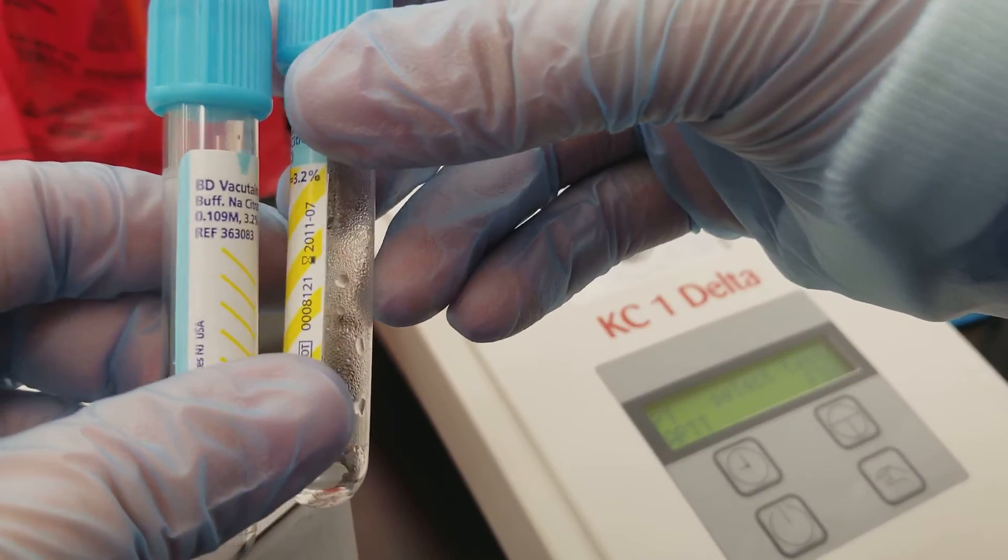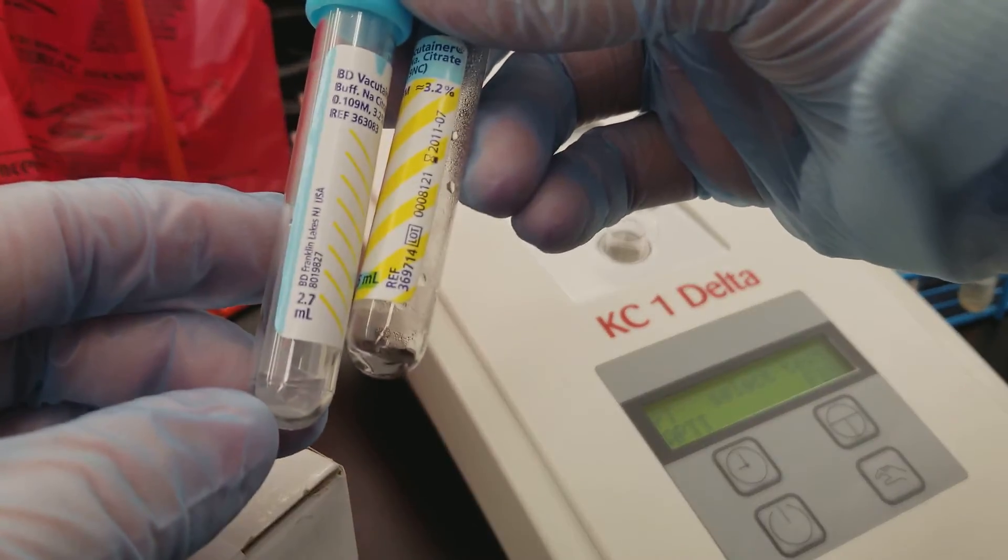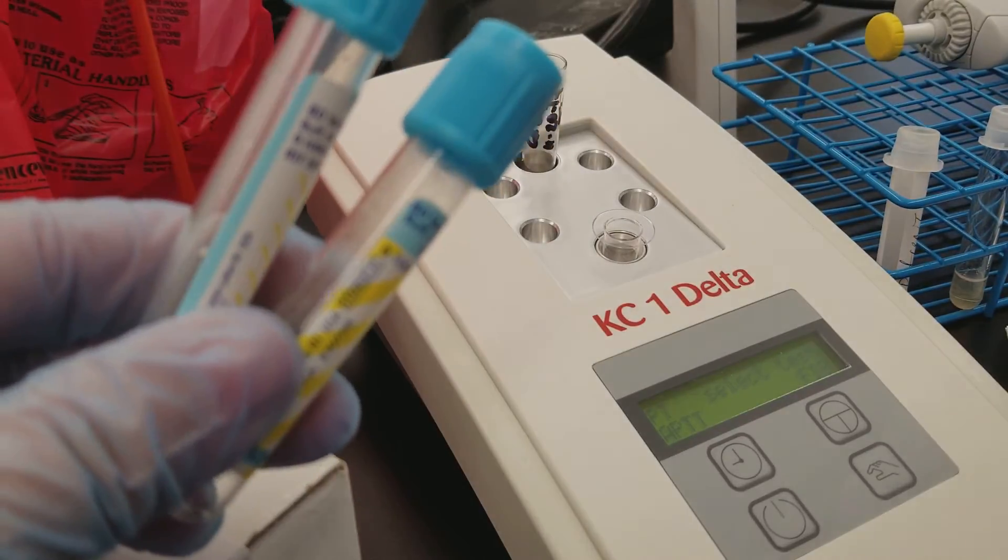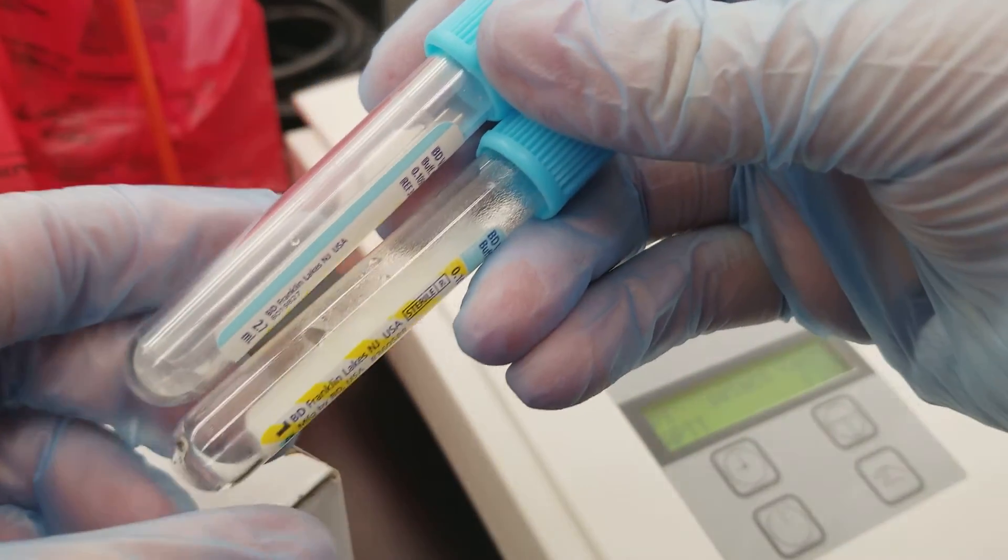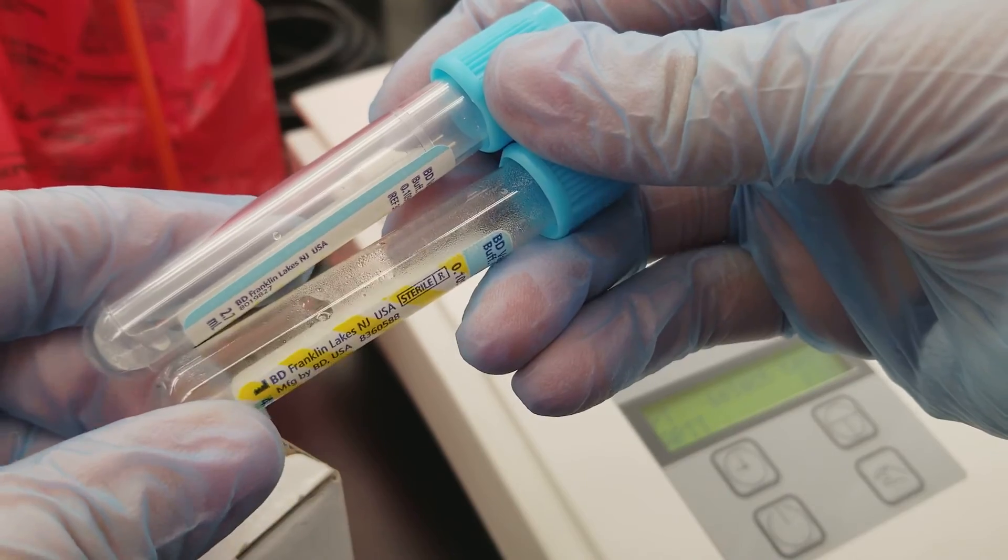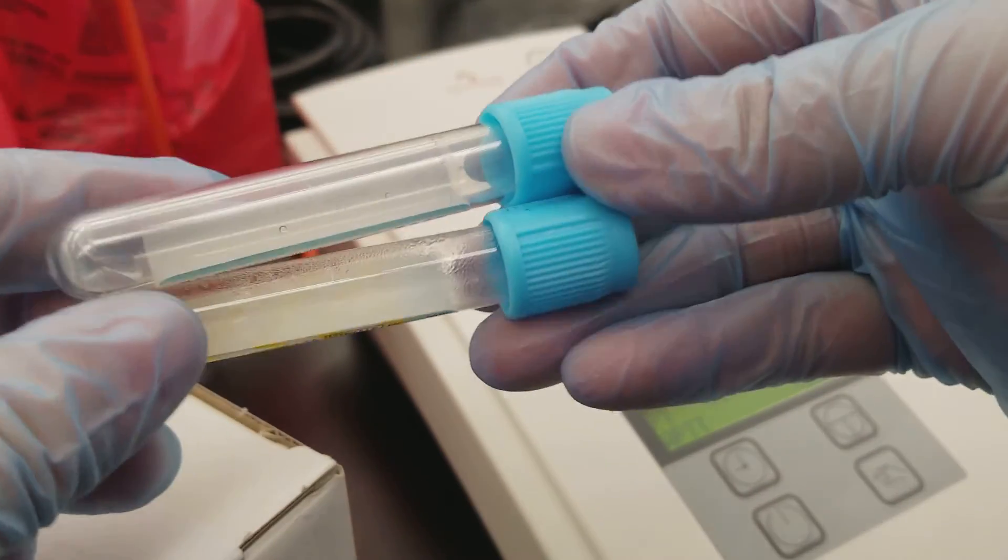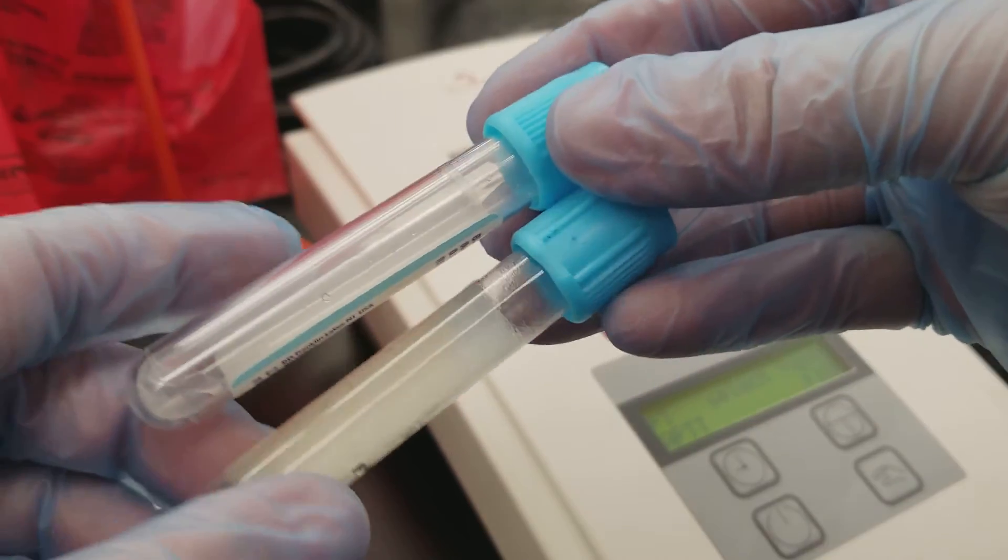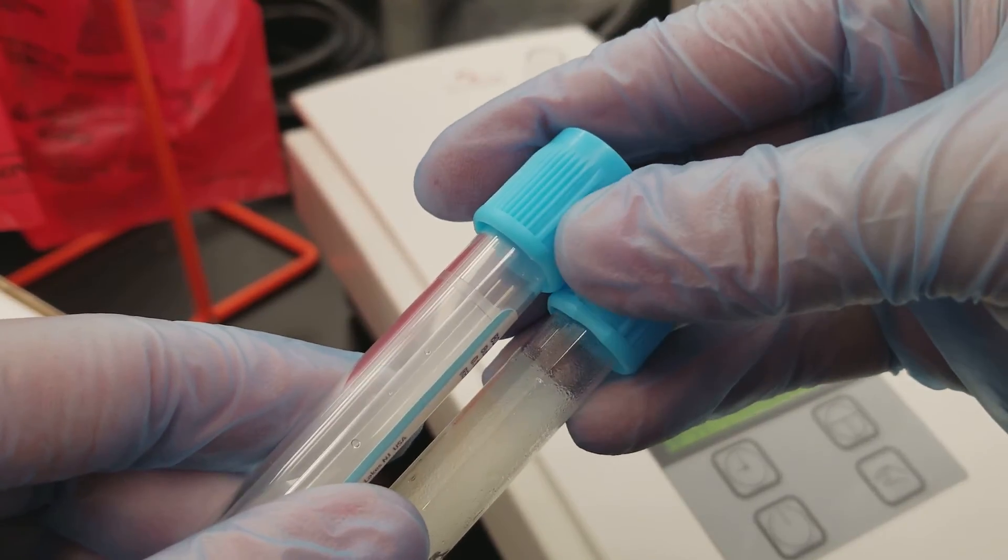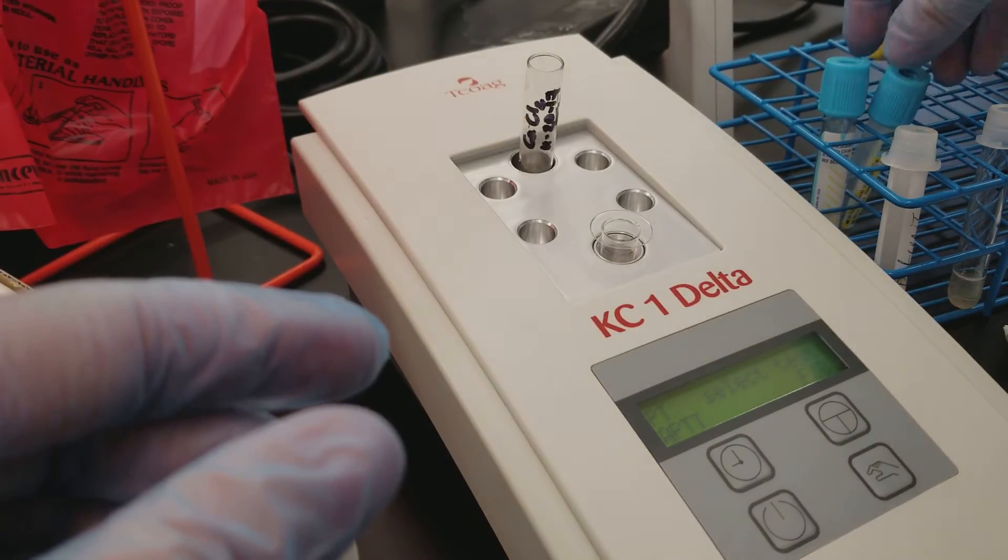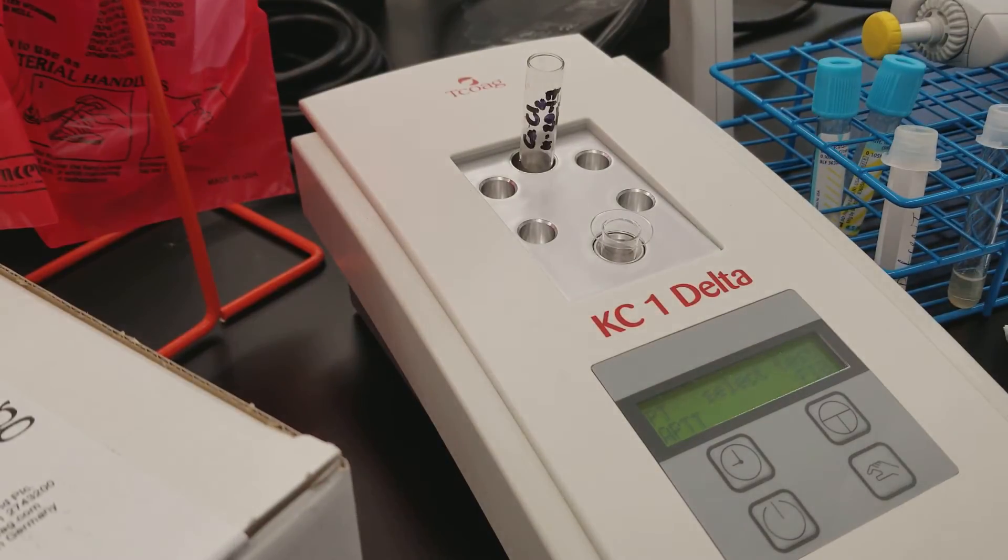And you want to have the fill line to indicate how much visually for the nurse or the phlebotomist to draw of the patient whole blood. And the reason that we want it to be 90 to 110% filled is that we want to make sure that our ratio for the anticoagulant is correct.